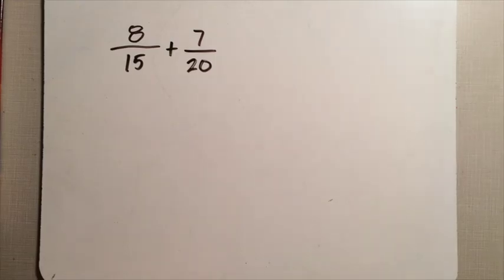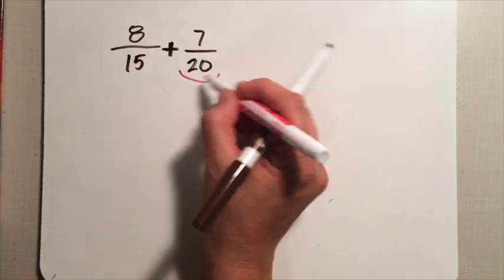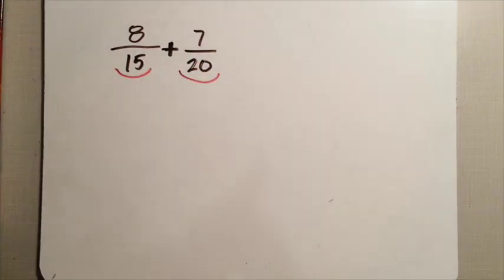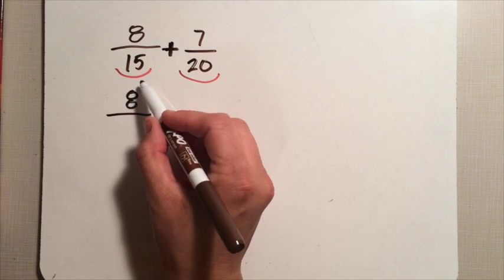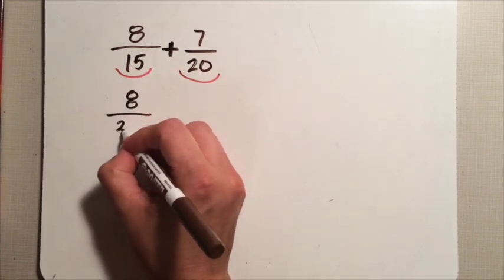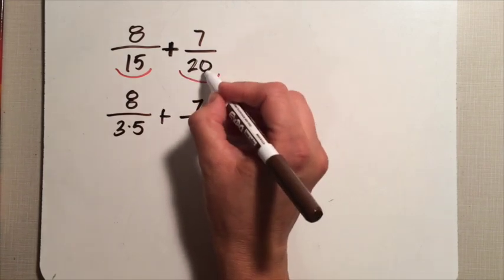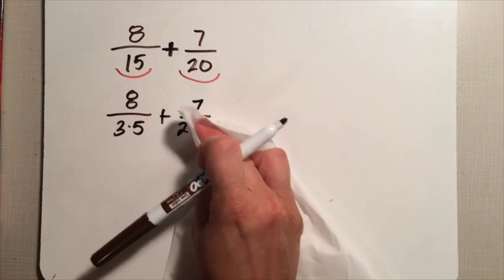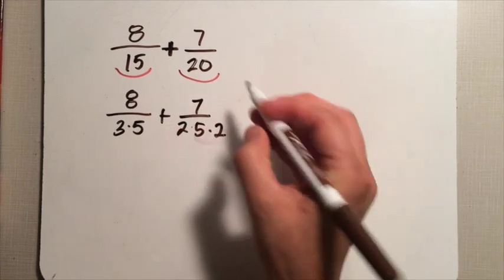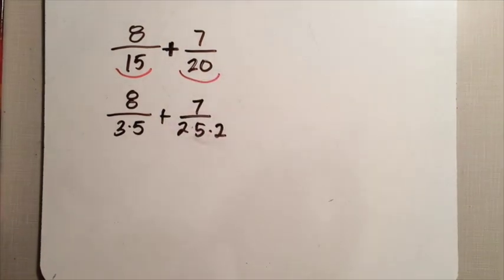Here's another fraction to add: eight fifteenths plus seven twentieths. I'm adding, I'm combining, I need the same size pieces, so I need a common denominator. Since the denominator is what needs to be the same, it's only the denominator I'm going to find prime factors for. Fifteen is three times five. Twenty is two times ten, and ten is five times two. Use the factor tree if you must, but the less you use it, the faster you'll get — and speed is going to make this less painful for you.